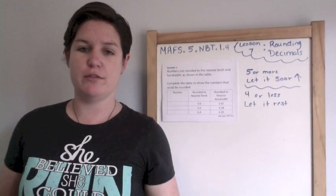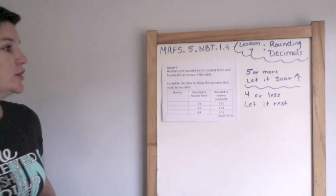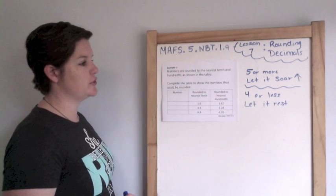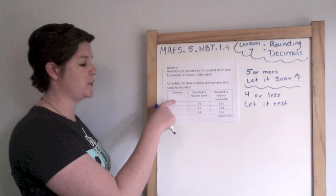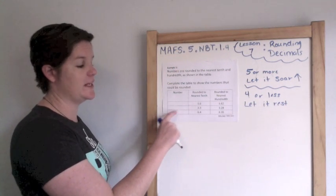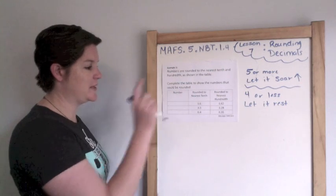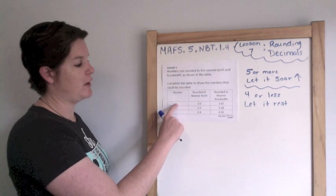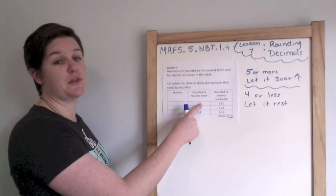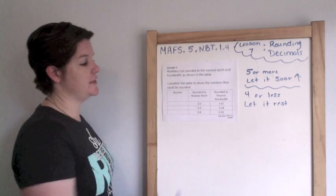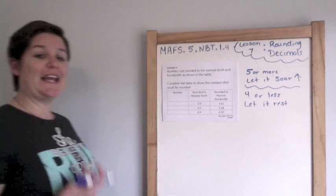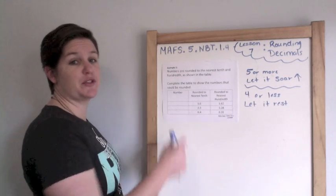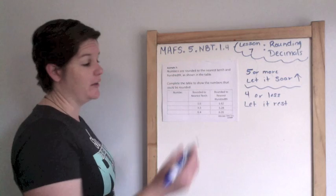Example five. Numbers are rounded to the nearest tenth and hundredth, as shown in the table. Complete the table to show the numbers that could be rounded. So what we're going to do is we're going to place numbers inside of these table spaces. Because this is a table item. And when we put this number, if we were to round it to the nearest tenth, this needs to be our result. And when we round to the nearest hundredth, this needs to be our result.